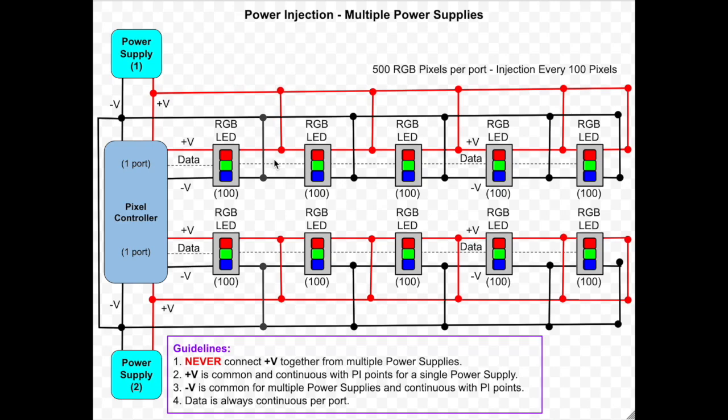The guidelines for using power injection with multiple power supplies are a bit different. Never ever connect plus V together from multiple power supplies. Notice that the plus V here and the plus V here are not connected together. Plus V is common and continuous with multiple power injection points from a single power supply. That means that from this power supply the plus V is continuous and common and can be injected at multiple places. Same for this power supply.